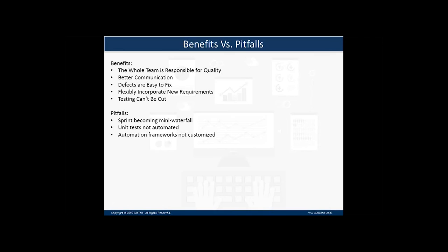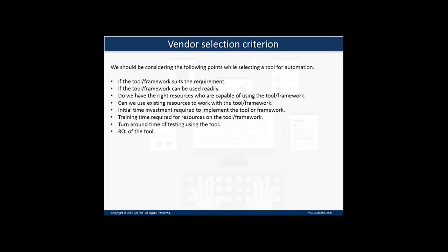Now let's talk about points to keep in mind — a simple vendor selection criteria to consider. The first point: whenever we look at a tool, it should suit our requirement. The solution should be readily usable without any further customization, because many times after getting into a tool we find it is not up to the mark or does not capture certain objects of our application. We may use multiple technologies to build an application, so the tool must suit our requirements completely without any customization needed.